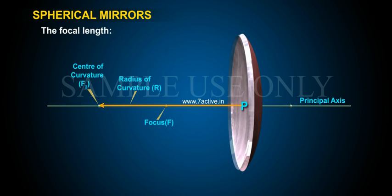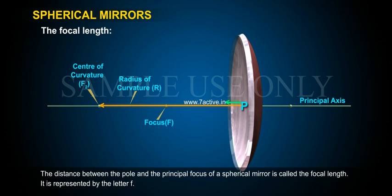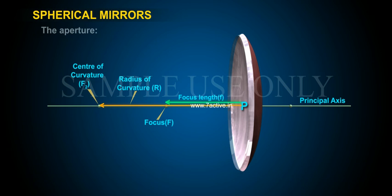The focal length. The distance between the pole and the principal focus of a spherical mirror is called the focal length. It is represented by the letter F.